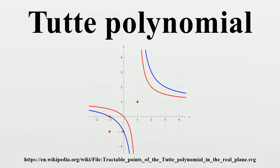Likewise, the dimension of the bicycle space can be computed in polynomial time by Gaussian elimination. For planar graphs, the partition function of the Ising model — i.e., the Tutte polynomial at the hyperbola — can be expressed as a Pfaffian and computed efficiently via the FKT algorithm. The idea was developed by Fischer, Kasteleyn, and Temperley to compute the number of dimer covers of a planar lattice model.